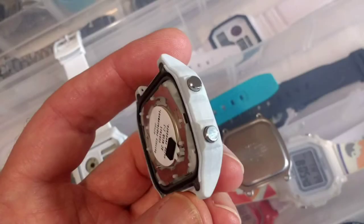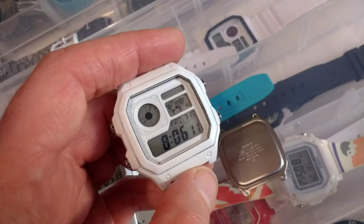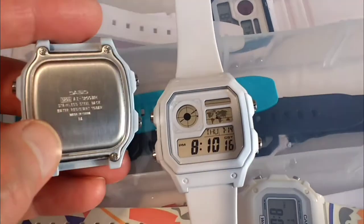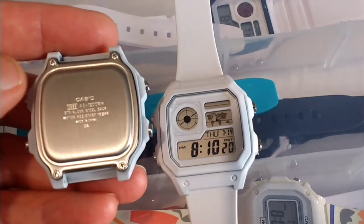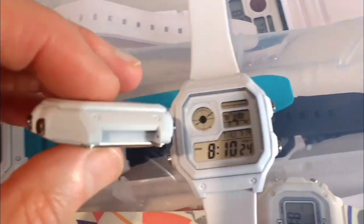I remove the white paint from the pushers using a scalpel blade. And here it is, the all white 100% Casio mod. You can then fit a white strap to complete the look.